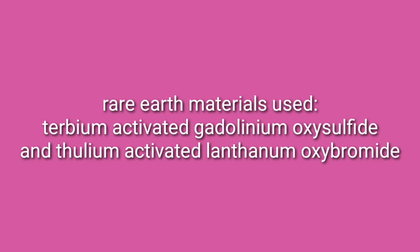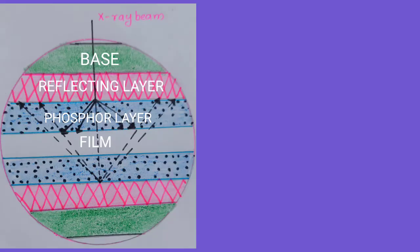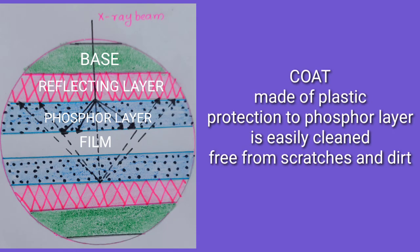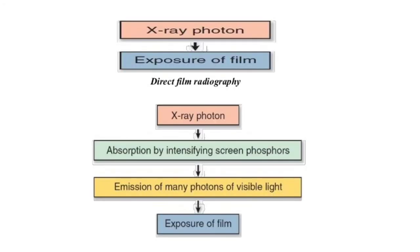Finally, the coat is made of plastic and has a thickness of eight micrometers. It provides protection to the phosphor layer, can be easily cleaned, and is free of scratches and dirt.